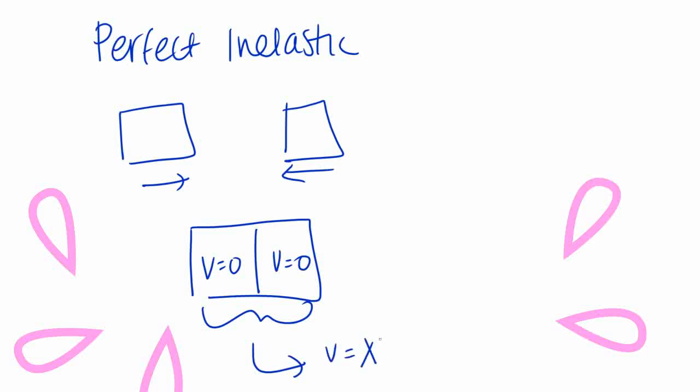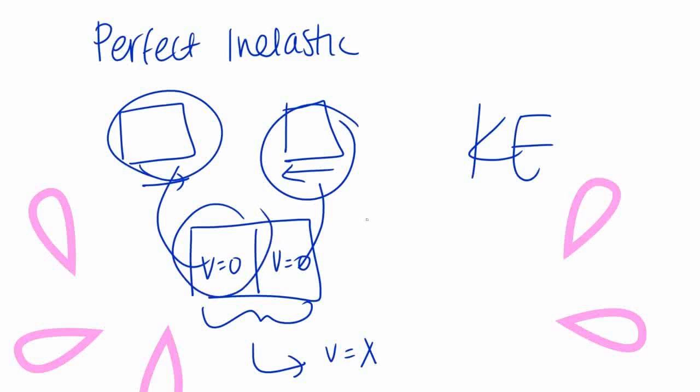So in here, we can see that kinetic energy is not conserved because the magnitude of this block initially does not correlate or is not equal to the magnitude of the final velocity of that block. Same thing for this block. The magnitude of the velocity of this block is going to be different from the final velocity of that block.